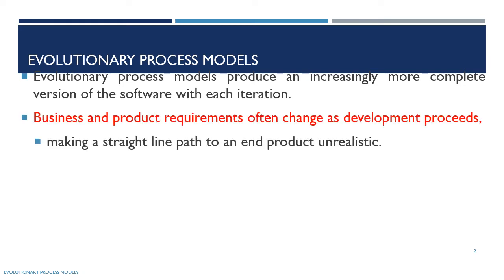Business and product requirements often change as development proceeds, making a straight-line path to an end product unrealistic. Business and product requirements can change at any stage of development, meaning requirements that seem straightforward theoretically may be different in practice.